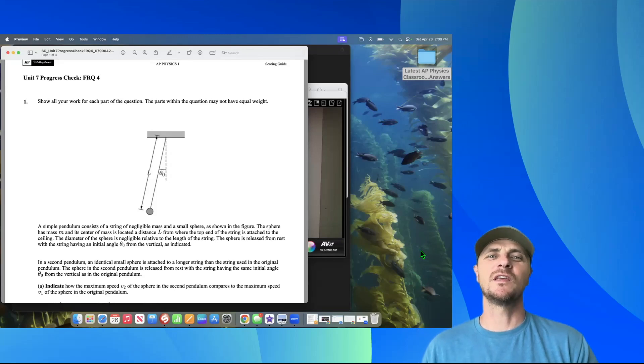Hey AP Physics 1 students, we're looking at Unit 7 FRQ4 from the AP Classroom Progress Checks. Great to see you. This is Mr. Heinrich. Let's jump in.